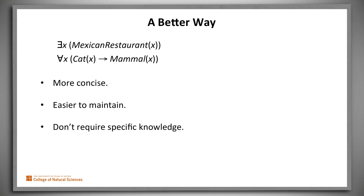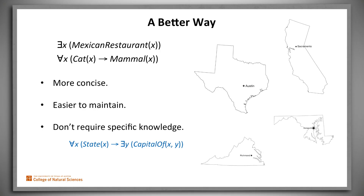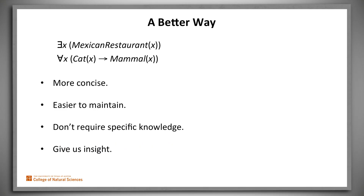Also, we can write quantified expressions when we know the generalization but don't actually know enough to write out all the options. For example, we can assert that every state has a capital without actually being able to write down all 50 individual claims about state capitals. And for much the same reason — namely that they capture a useful generalization — they provide more insight into the world we're trying to describe.